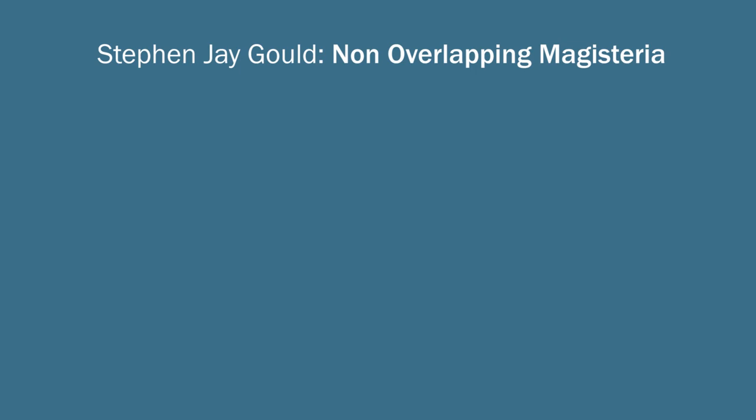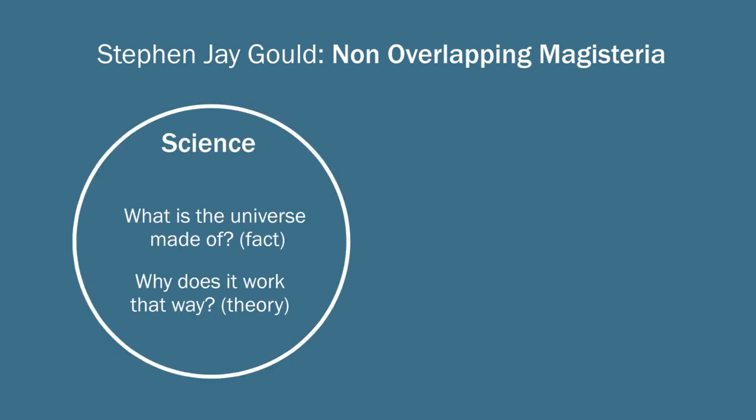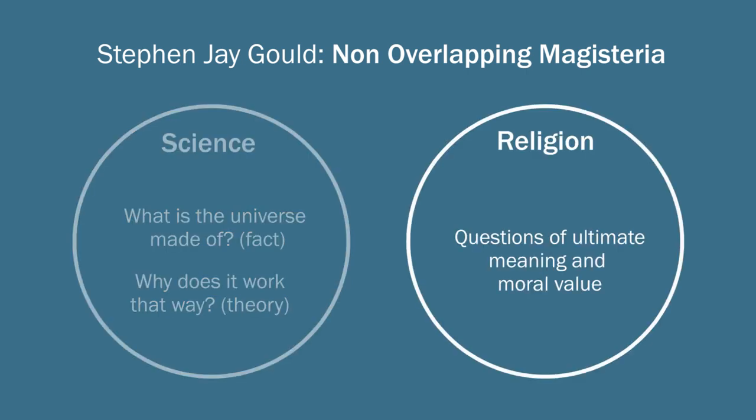And they were non-overlapping in his view in such a way that science covers the empirical realm, what the universe is made of, he called that the domain of fact, and why those things work the way they do, he called that the domain of theory. Whereas the magisterium of religion extends over questions of ultimate meaning and moral value.